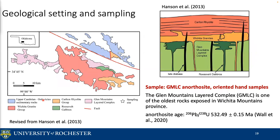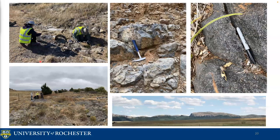With those scientific questions, we sampled the Glen Mountain Layered Complex anorthosite from the Wichita Mountains Province in Oklahoma. This is a geological map and the sampling sites are marked as stars. The Glen Mountain Layered Complex is one of the oldest rocks exposed in the Wichita Mountains Province. The age of the anorthosite is determined by high-precision U-Pb dating at 532 Ma. We sampled oriented hand samples from four sites, focused on two sites with six subsites in total.